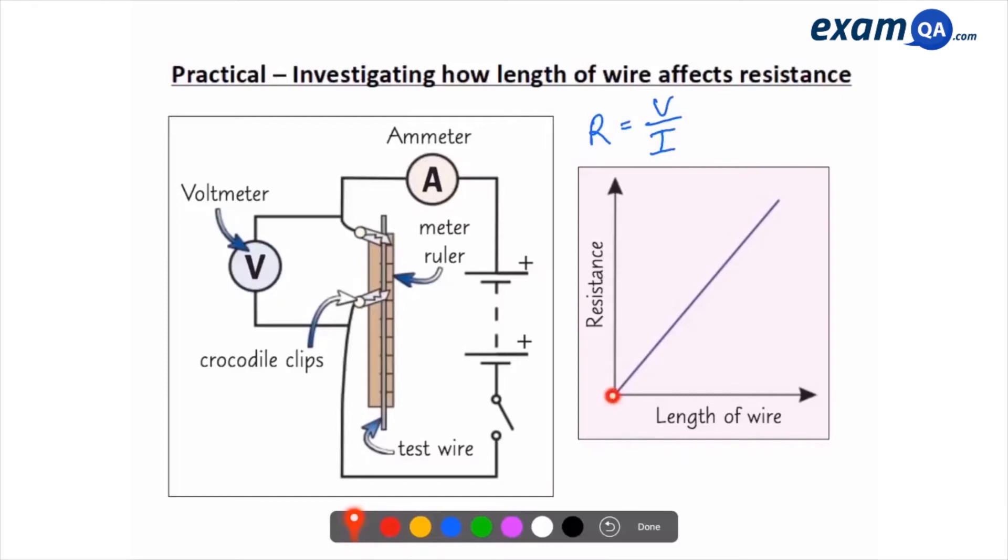So eventually, I'm going to plot length of wire on the x-axis and I'm going to plot resistance on the y-axis. Now, you should theoretically get this line, a straight line. And this shows us that as the length of wire increases, so does the resistance, which means that they are directly proportional.